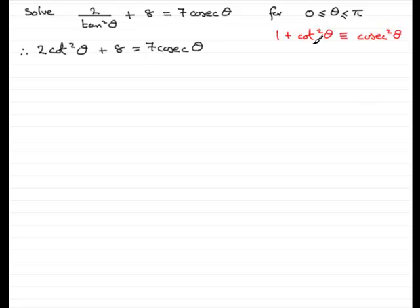Look, I'll show you. From here, we make cot squared theta the subject. So cot squared theta would be identical to cosec squared theta minus 1. So I can put this in place of this term. So we'd therefore have 2 bracket cosec squared theta minus 1. And then we've got the plus 8 equals the 7 cosec theta.